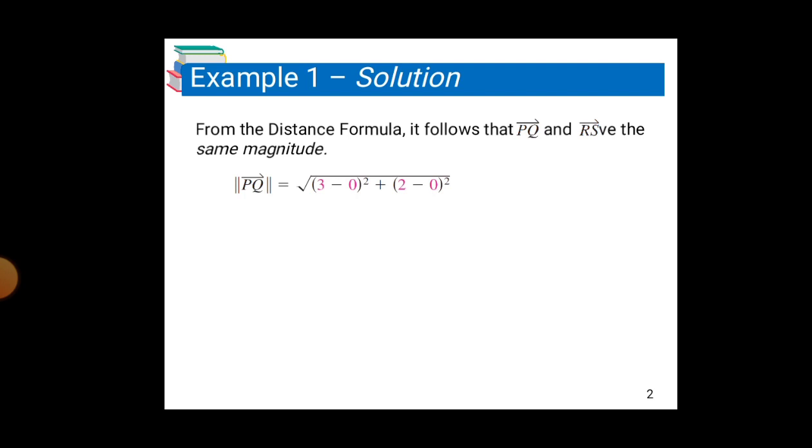Solution: From the distance formula, it follows that vectors PQ and RS have the same magnitude. |PQ| = √((3 - 0)² + (2 - 0)²) = √13. The magnitude of vector RS is |RS| = √((4 - 1)² + (4 - 2)²) = √13. So they have the same magnitude.